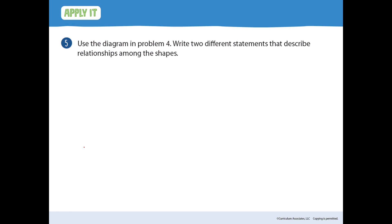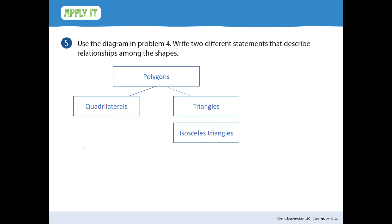Number five: use the diagram in problem four. Write two different statements that describe relationships among the shapes. Some examples you could put down: isosceles triangles have all the properties that triangles have; all triangles and quadrilaterals are polygons.